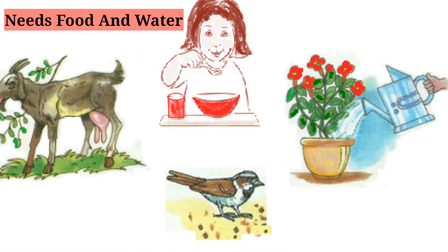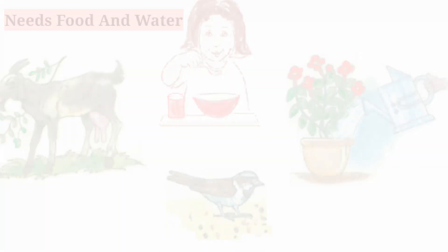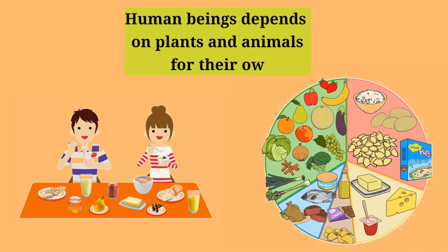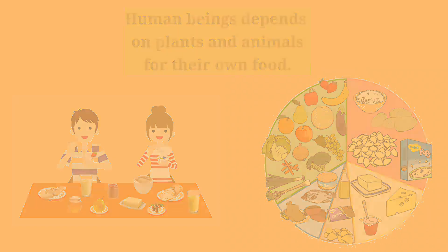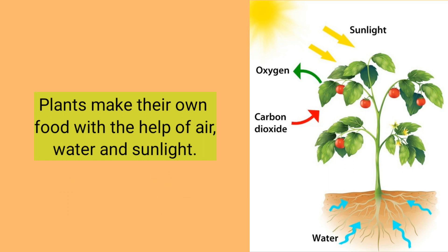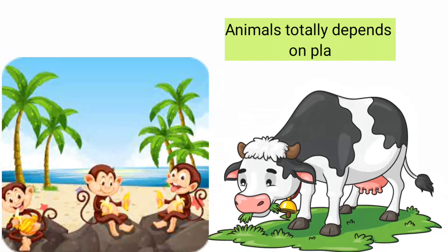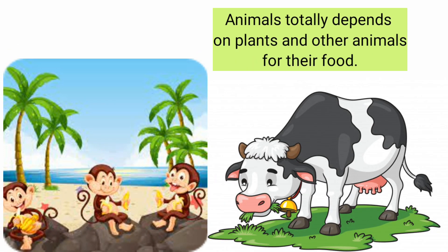Living things need food and water. Human beings depend on plants and animals for their food. Plants make their own food with the help of air, water, and sunlight. Animals totally depend on plants and other animals for their food.